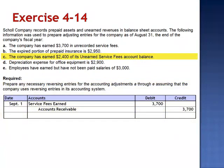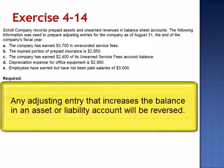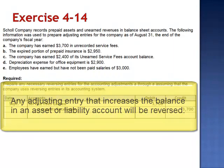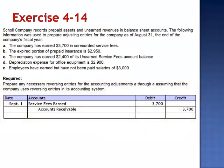Letter C: the company has earned $2,400 of its unearned service fees account balance. The adjusting entry on August 31st is a debit to unearned service fees and a credit to service fees earned. This adjustment decreases the value of a liability. Only adjustments that increase a balance sheet account — an asset or a liability — will be reversed. Letter C will not result in a reversing entry.